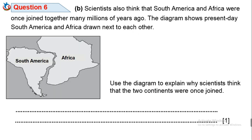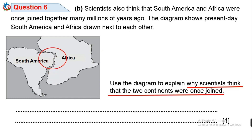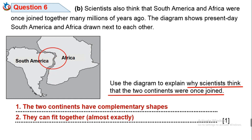Question 6b: Scientists also think that South America and Africa were once joined together many millions of years ago. The diagram shows present-day South America and Africa drawn next to each other. Looking at the maps, you will notice that: 1. the two continents have complementary shapes, and 2. they can fit together almost exactly. These are the reasons to support the claim that the two continents were once joined.